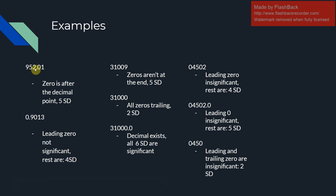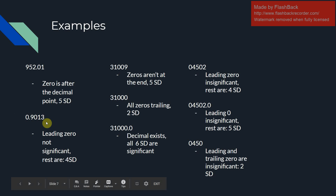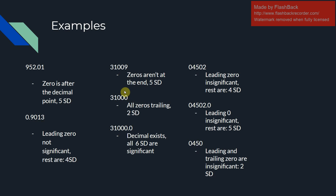Looking at a couple of examples: 952.01 — since the zero is after the decimal point, all digits are significant, giving you five. 31,009 — the zeros are in between two non-zeros, so they're all significant, giving five significant digits. 4502 — since the zero is in the middle, it's significant, giving four significant digits. 0.9013 — the leading zero is insignificant, but the rest are, giving four significant digits. 31,000 — no decimal place and trailing zeros, so only two significant digits.